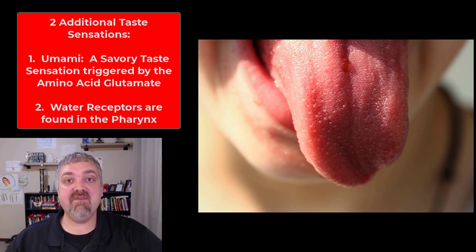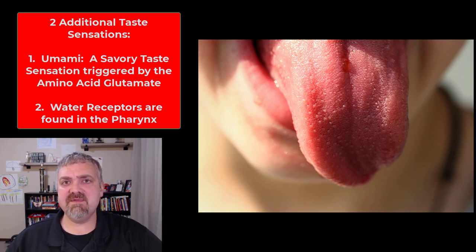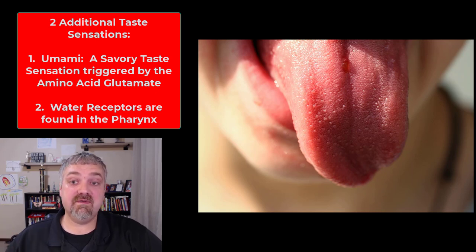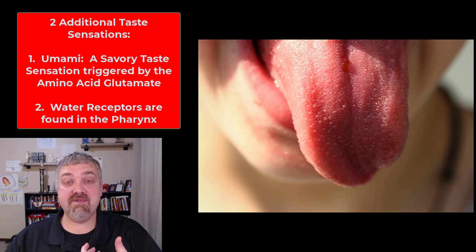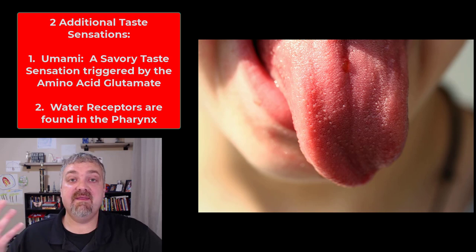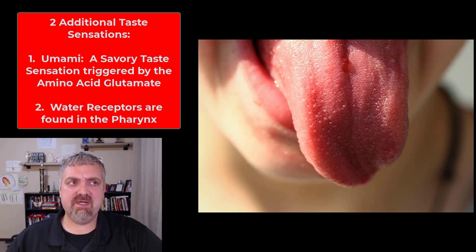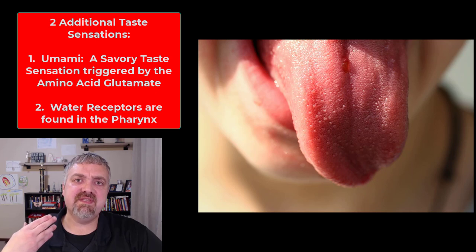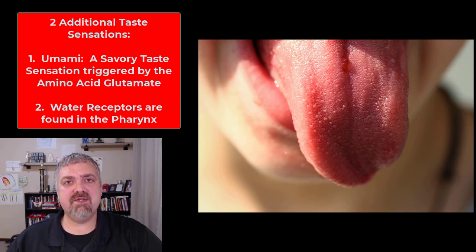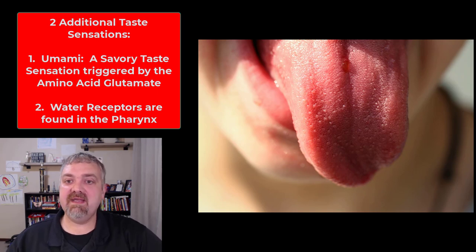There is also umami, which is a savory receptor. Things like Parmesan cheese and chicken broth trigger these receptors the most. It's triggered by the amino acid glutamate, so it's actually a protein sensor. So we have a sweet sensor for sugar and carbohydrates, a salty sensor for mineral content, and umami for the protein content of food. And lastly, we have water receptors — we don't think of water as having a taste, but we do have water receptors, most of them in the pharynx. So sweet, salty, sour, bitter, umami, and water are the six taste sensations we'll cover.